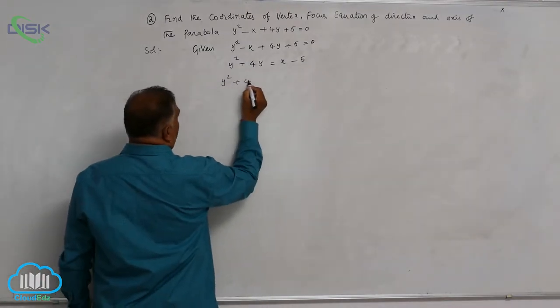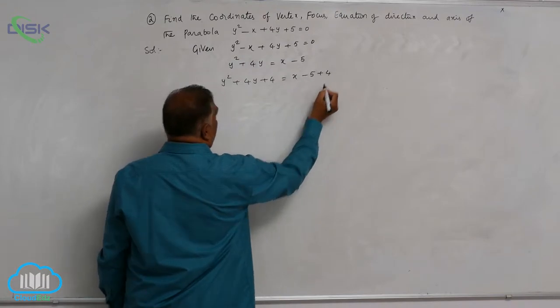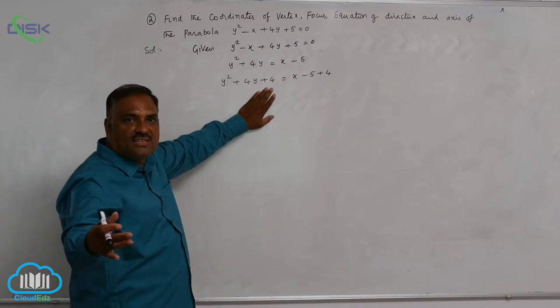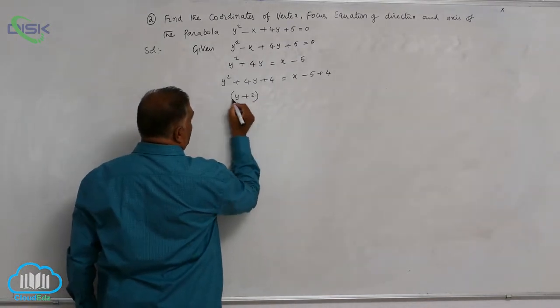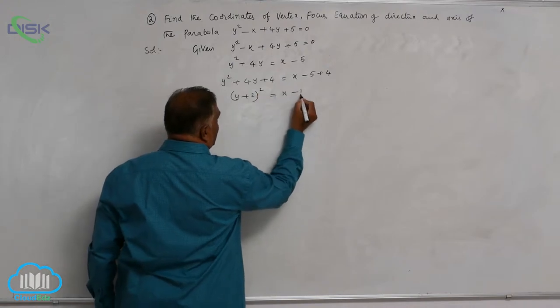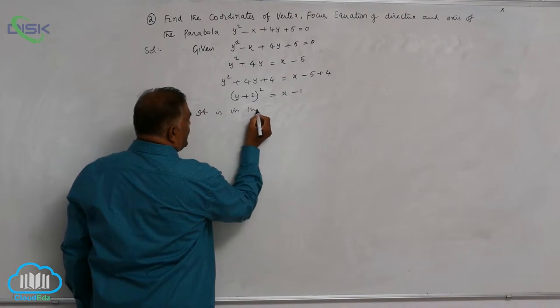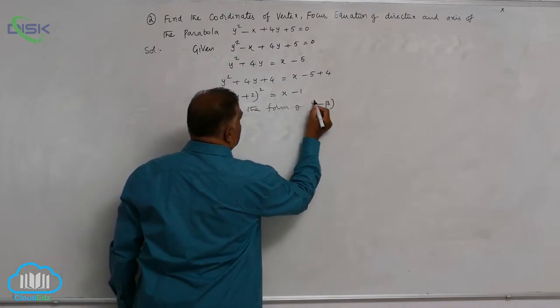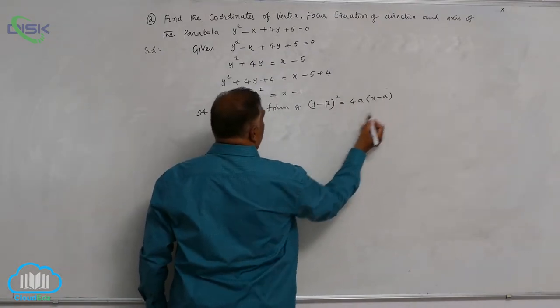y square plus 4y plus 4 is equal to x minus 5 plus 4, because the addition of 4 makes LHS a perfect square as y plus 2 whole square is equal to x minus 1. It is in the form of y minus beta whole square is equal to 4a into x minus alpha.